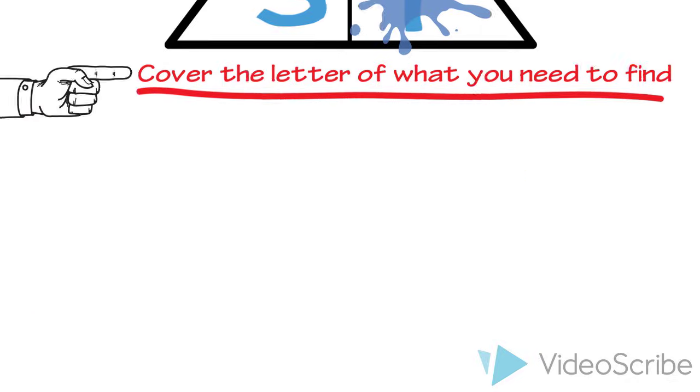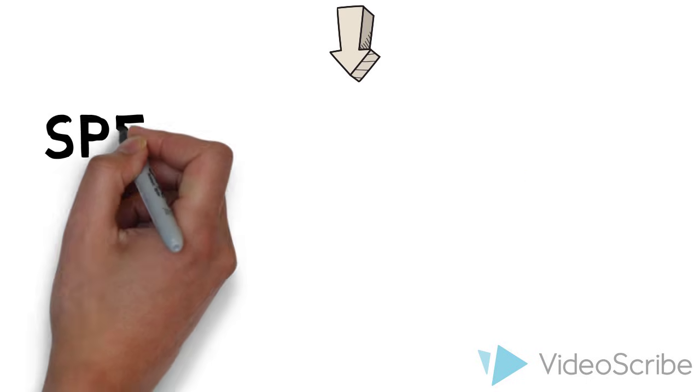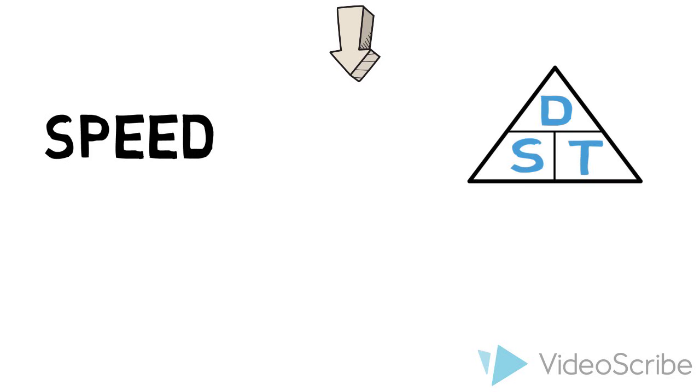Here is how you should use it. To find the formula for speed of an object, we cover up the S. This then shows that distance is over time, or distance divided by time.